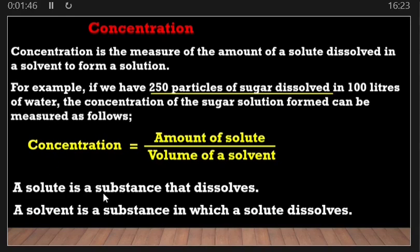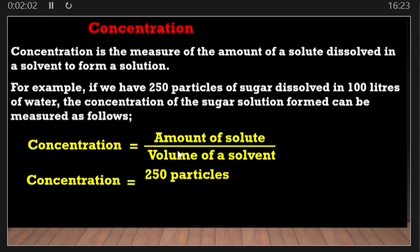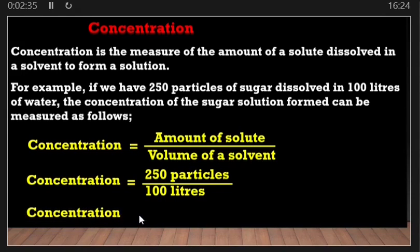Let's look at how we can find the concentration. Concentration is equal to amount of solute divided by volume of solvent. The amount of solute we have is 250 particles of sugar, divided by the volume of solvent, which is 100 liters. So we divide 250 by 100, which gives us a concentration equal to 2.5 particles per liter.